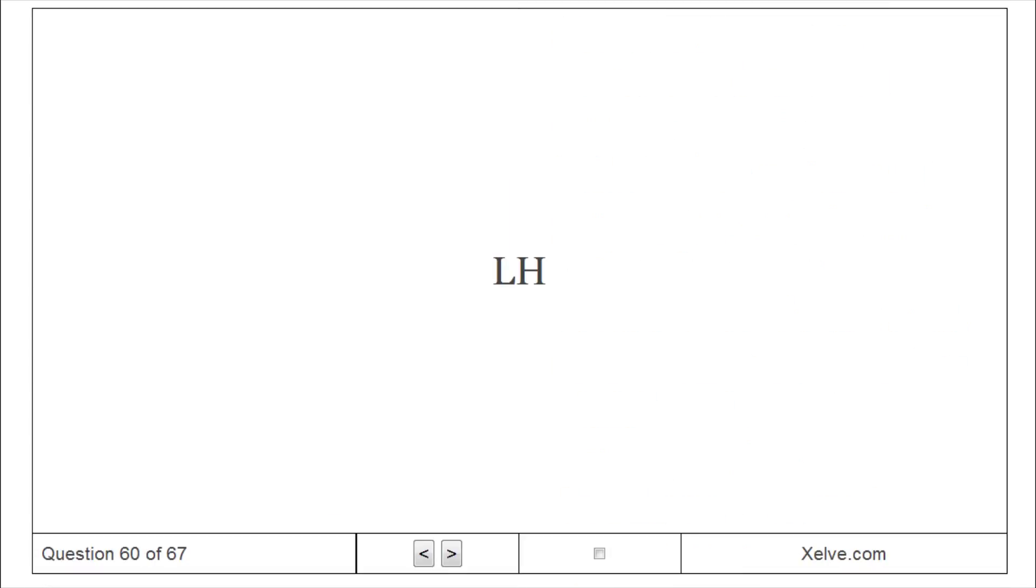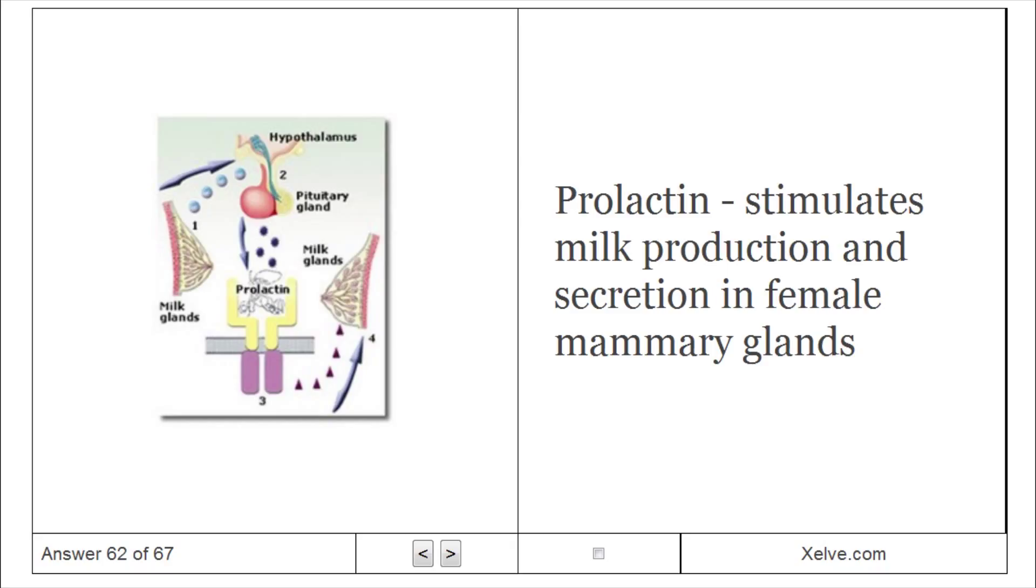LH: luteinizing hormone. PRL: prolactin. Hormone stimulates milk production and secretion in female mammary glands.